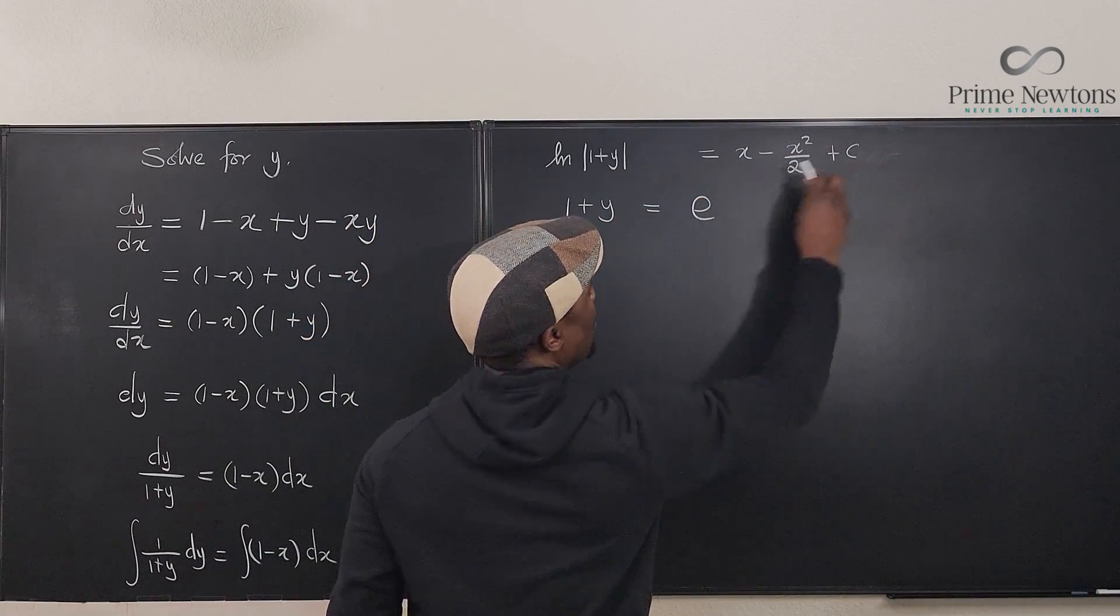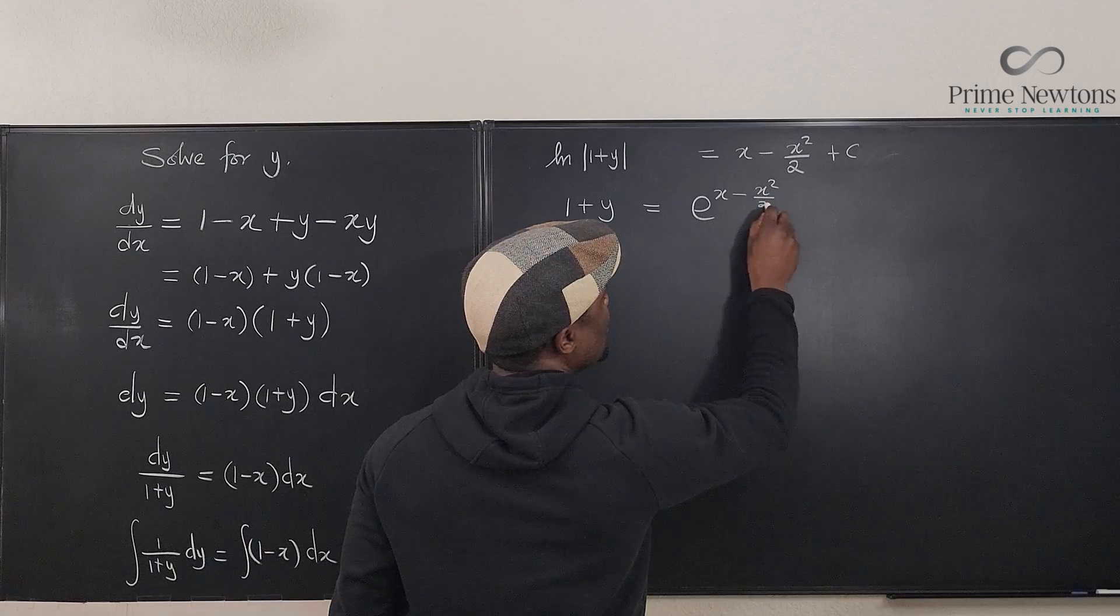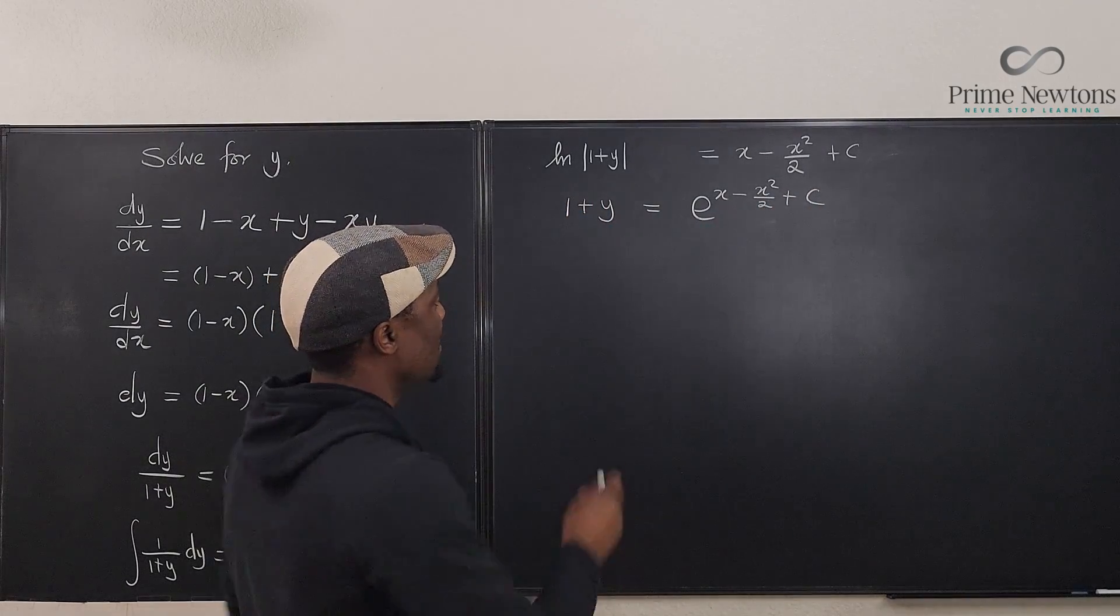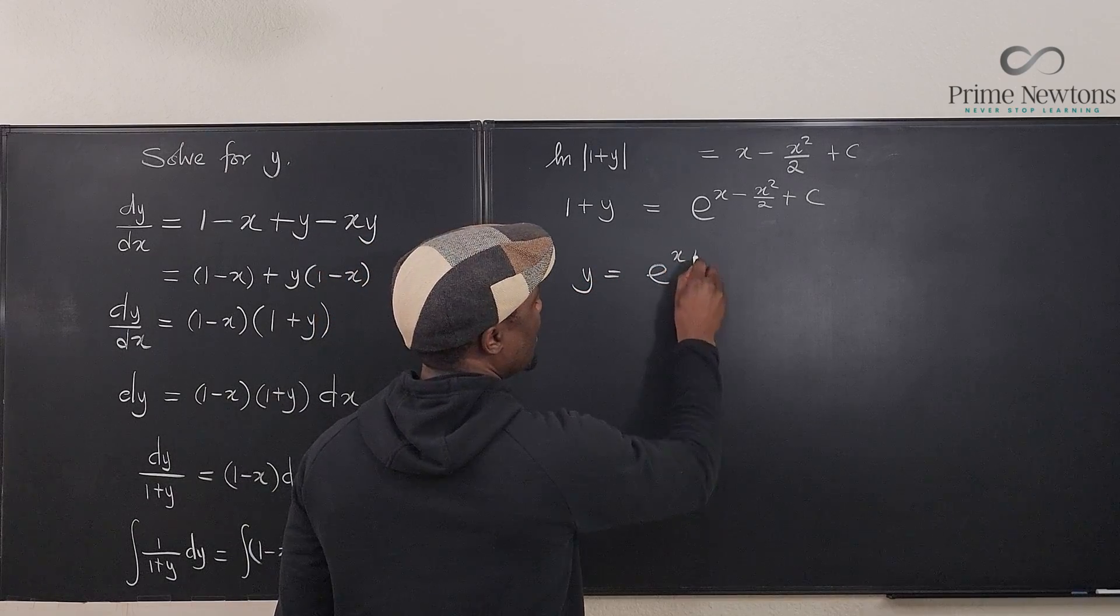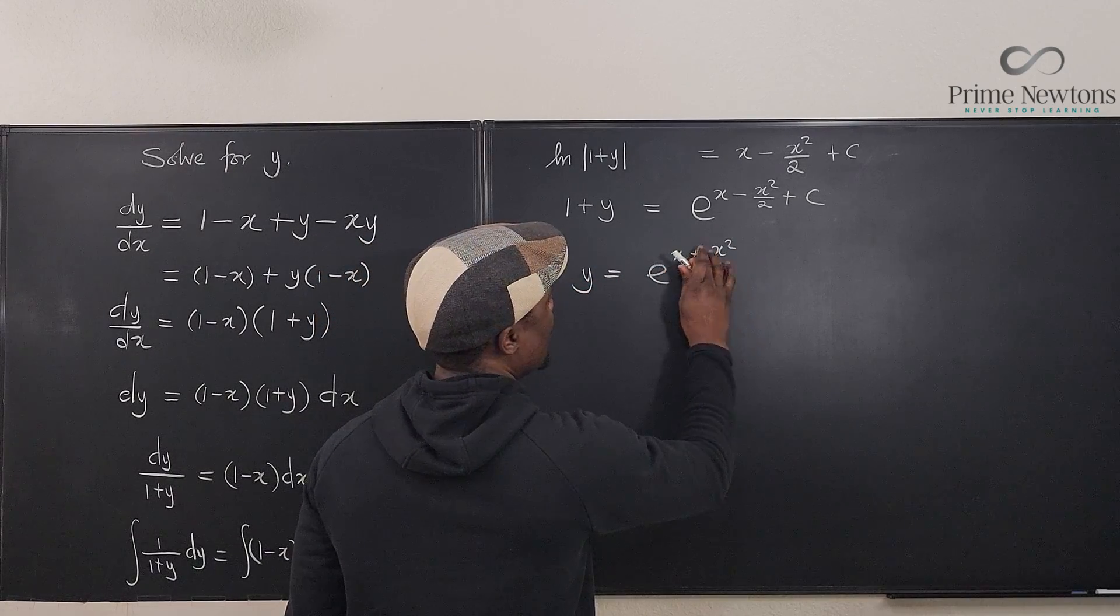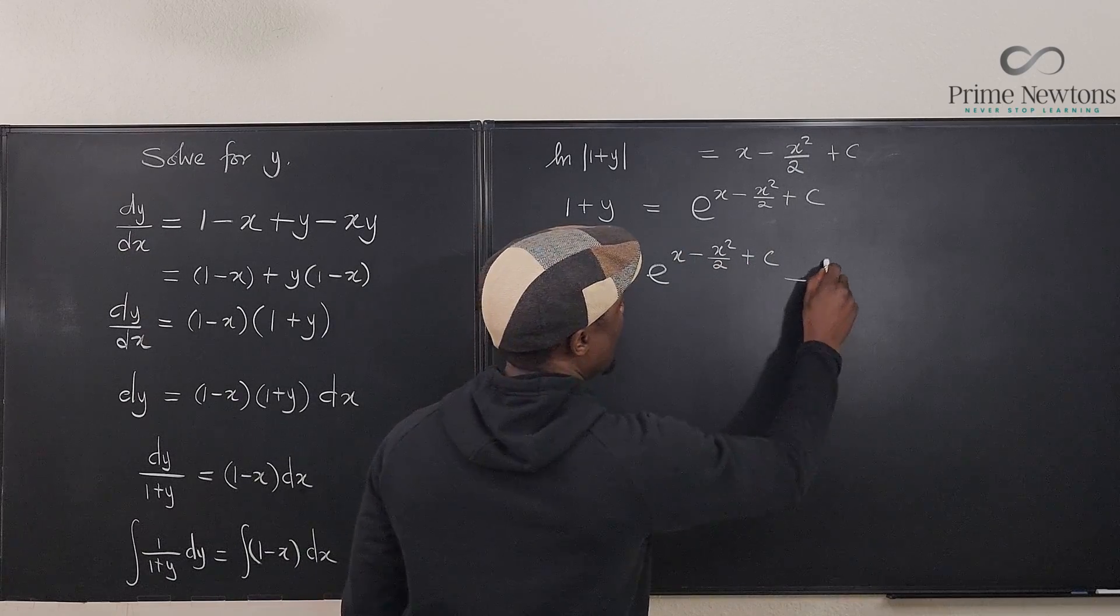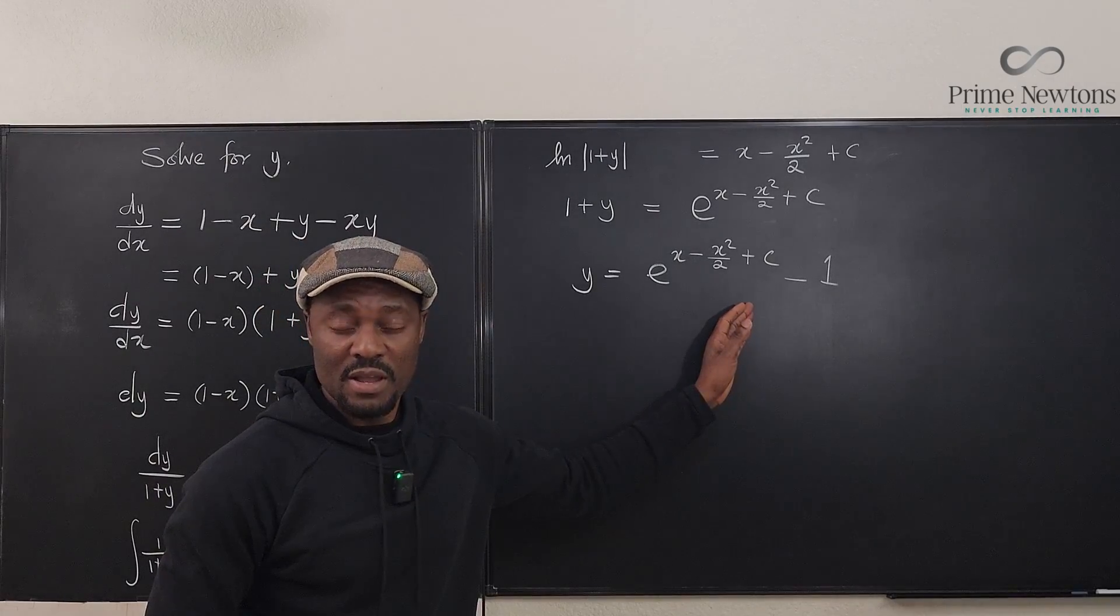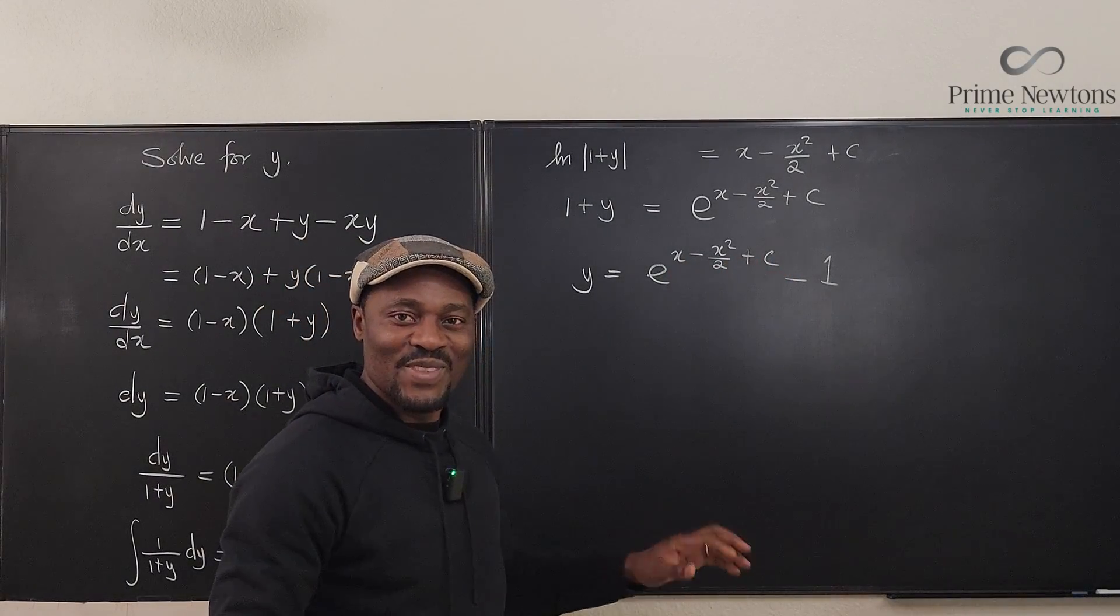We can move this one over to that side so that y equals e to the (x minus x squared over 2 plus c) minus 1. You can leave your answer this way, but a lot of times this c doesn't fit, you know, that group, so you want to separate this.